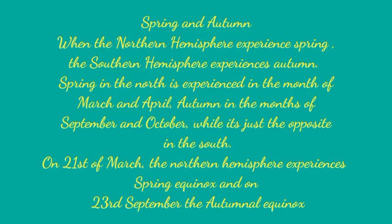In consideration of the northern hemisphere, 21st of March is considered to be the spring equinox, while 23rd of September is considered to be the autumnal equinox — which is exactly the opposite in the southern hemisphere.